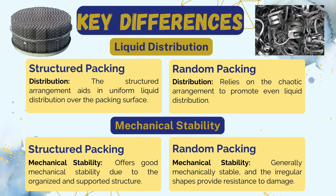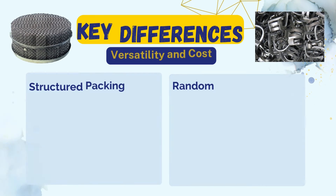The fifth key difference is liquid distribution. In structured packing, the arrangement aids in uniform liquid distribution over the packing surface. In random packing, the chaotic arrangement promotes liquid distribution but is not as efficient as structured packing. The sixth key difference is mechanical stability. Structured packing offers good mechanical stability due to its organized and supported structure, while random packing is generally mechanically stable with irregular shapes providing resistance to damage.